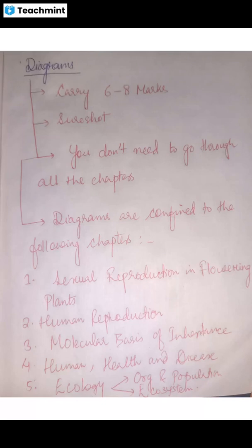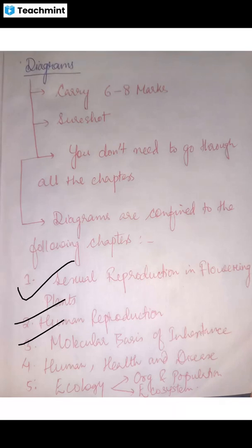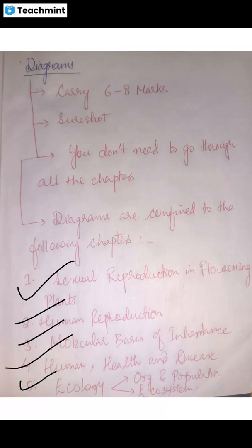The key chapters are: sexual reproduction in flowering plants, human reproduction, molecular basis of inheritance, human health and disease, and ecology. I am going to show you a list, so you can take a screenshot if you want.